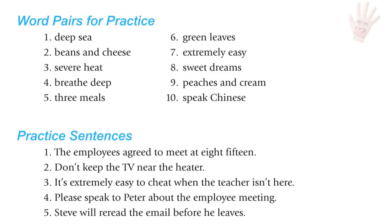Word pairs for E: deep sea, beans and cheese, severe heat, breathe deep, three meals, green leaves, extremely easy, sweet dreams, peaches and cream, speak Chinese.